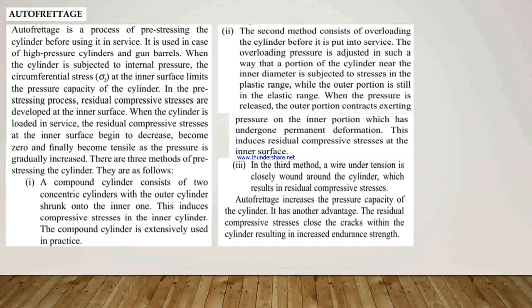In the second method, the cylinder is overloaded before being put into service. The overloading pressure is adjusted such that the portion of the cylinder near the inner diameter is subjected to stresses in the plastic range, while the outer portion remains in the elastic range. When the pressure is released, the outer portion contracts, exerting pressure on the inner portion which has undergone permanent deformation, inducing residual compressive stresses at the inner surface.